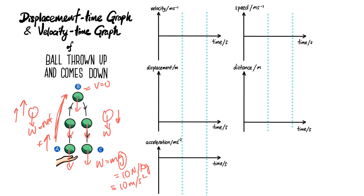From B to C, the ball is coming down. The weight is now in the direction of the ball's motion, so the net force causes it to accelerate — it goes down faster and faster. At point C, given the ideal situation with no air resistance, the speed at A and C will be the same, and that will be the maximum speed.